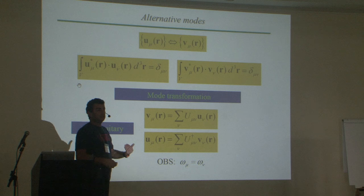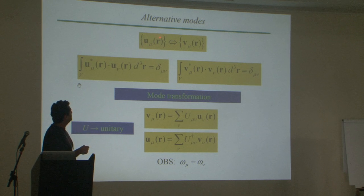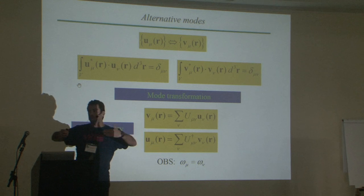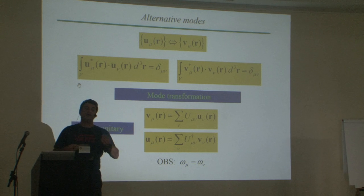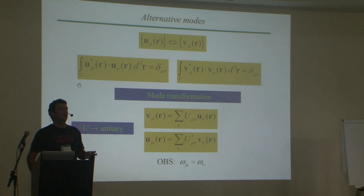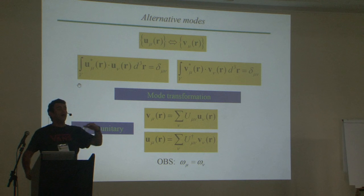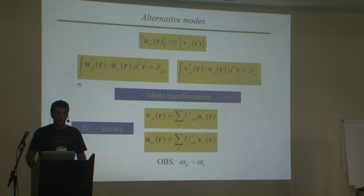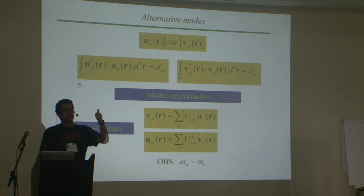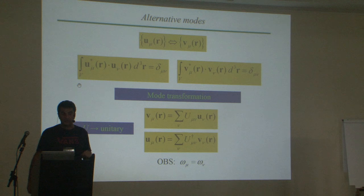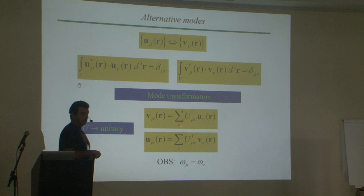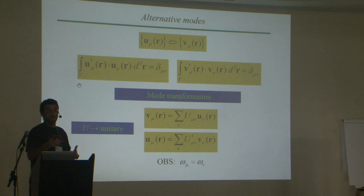We can ask: what if I start with a different mode structure? Suppose in free space I decide to use plane waves and define creation and annihilation operators for plane waves — Fock states and coherent states for plane waves. Then I want to describe the same electromagnetic field using spherical waves. How can I express a Fock state with a single photon in a plane wave in terms of a decomposition of spherical waves? This is the question we are going to address, in simpler examples than plane waves to spherical waves.